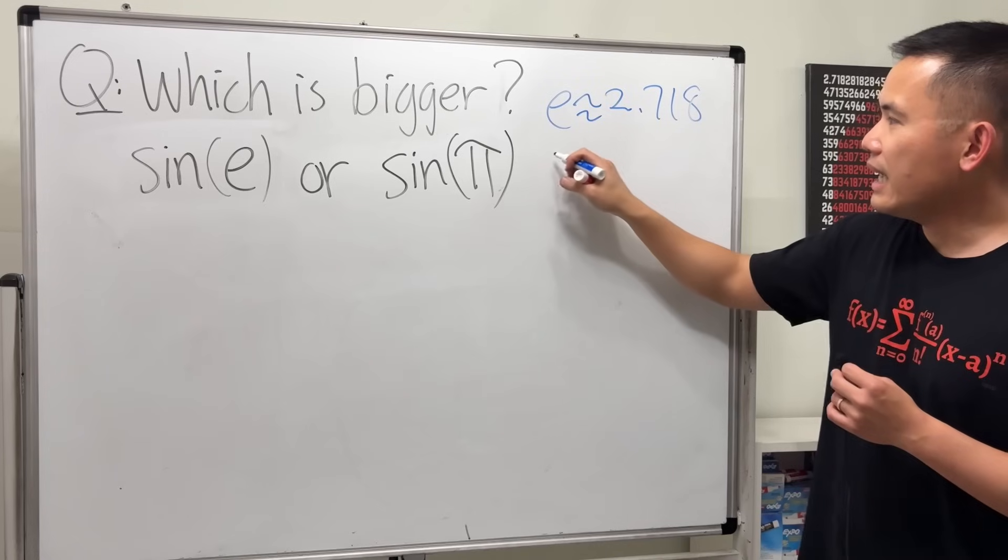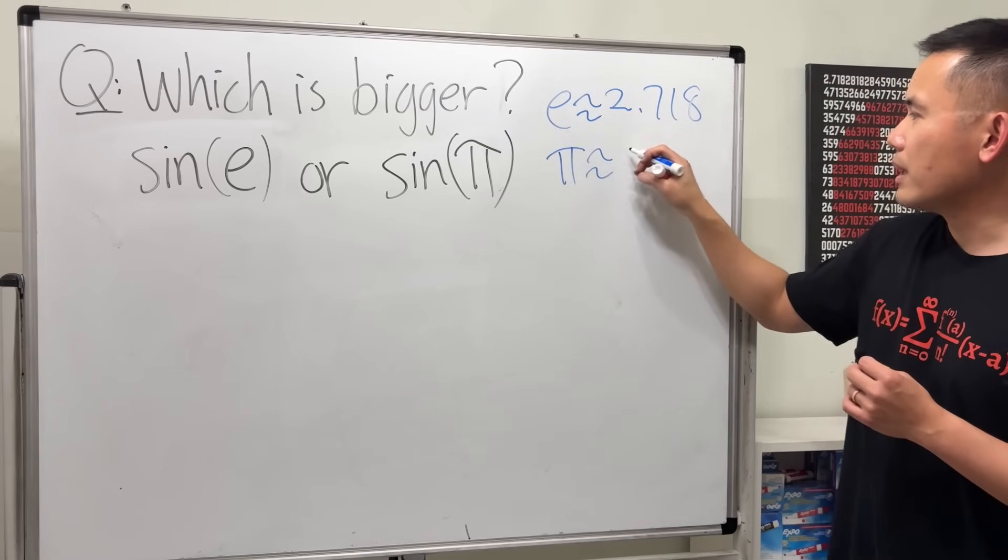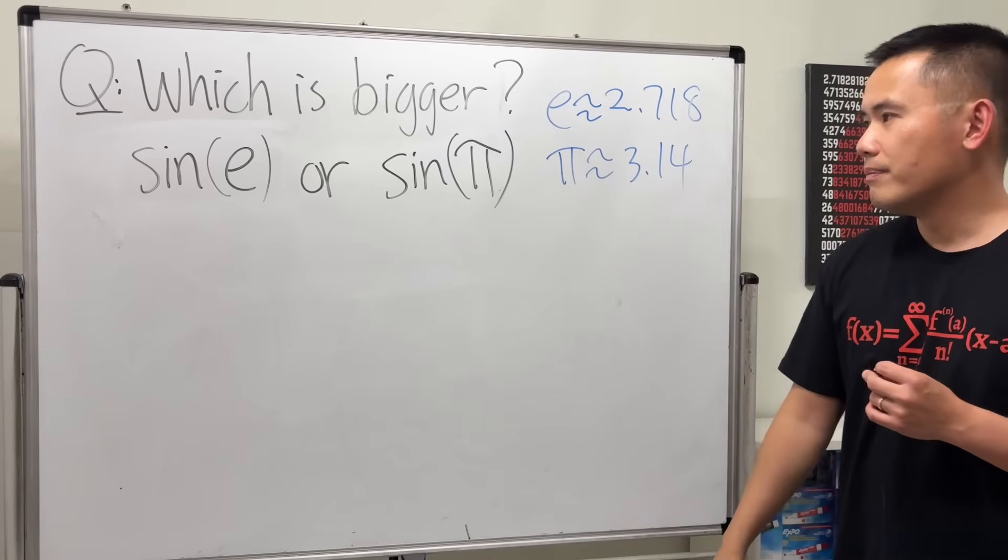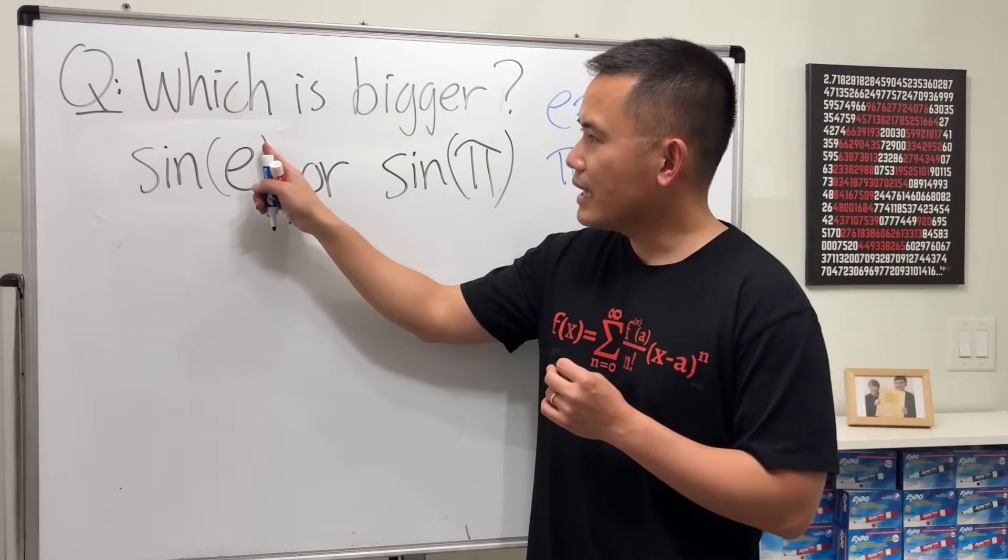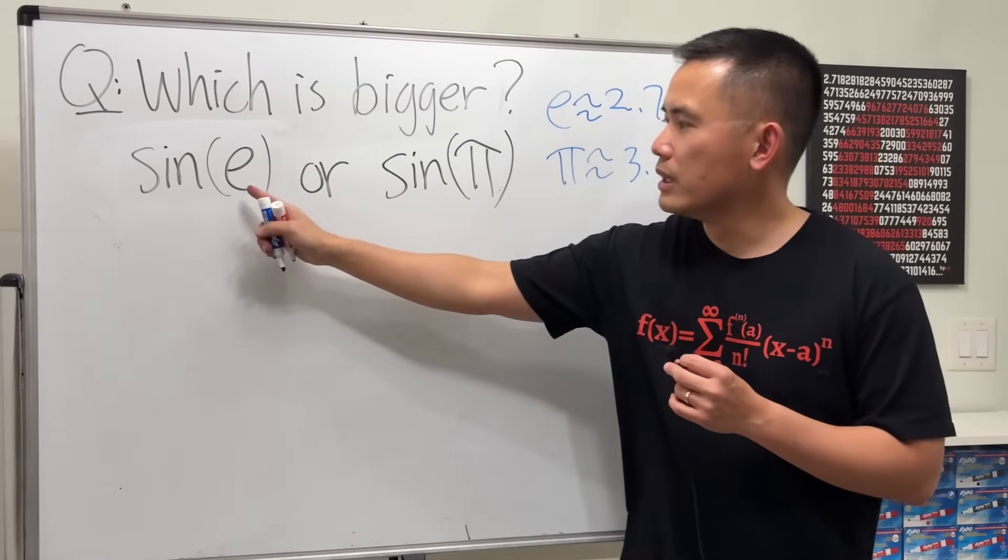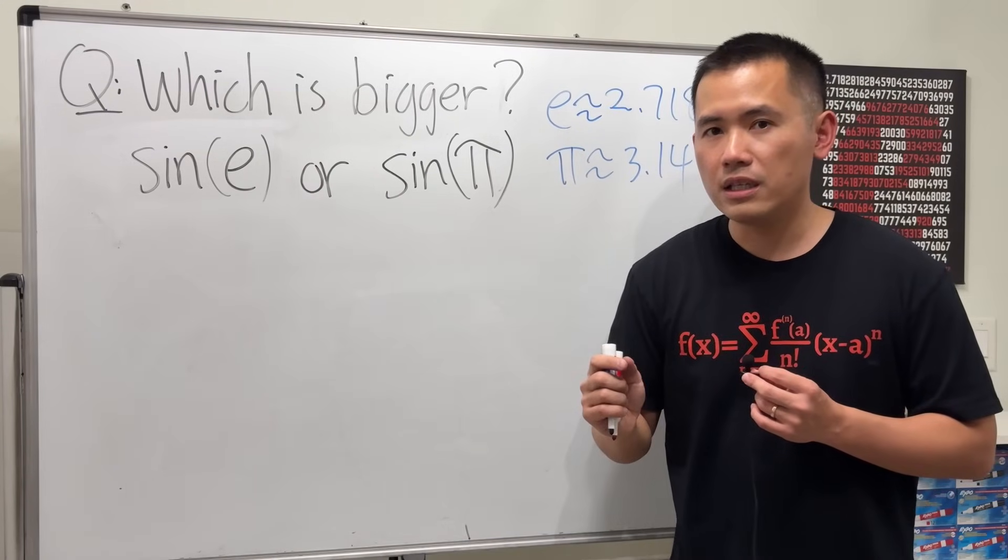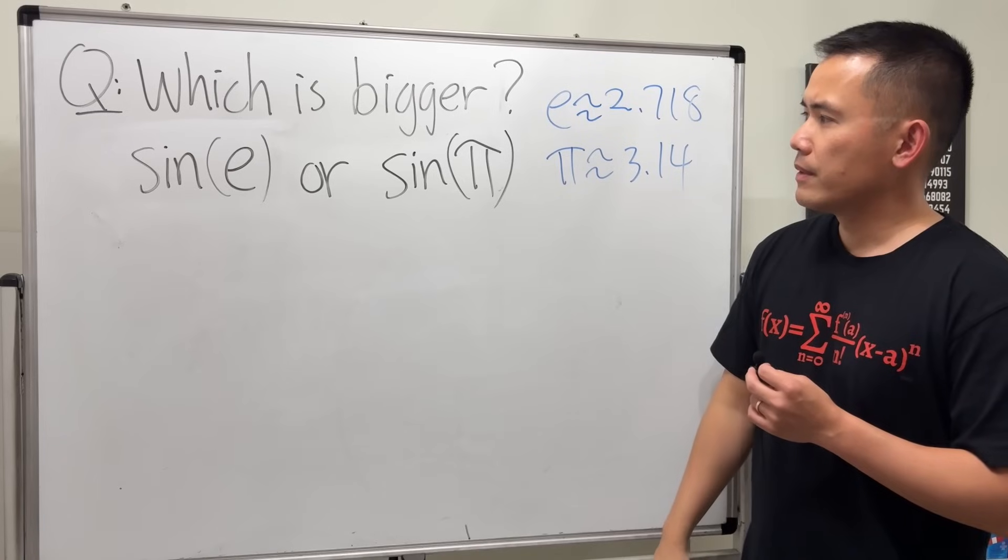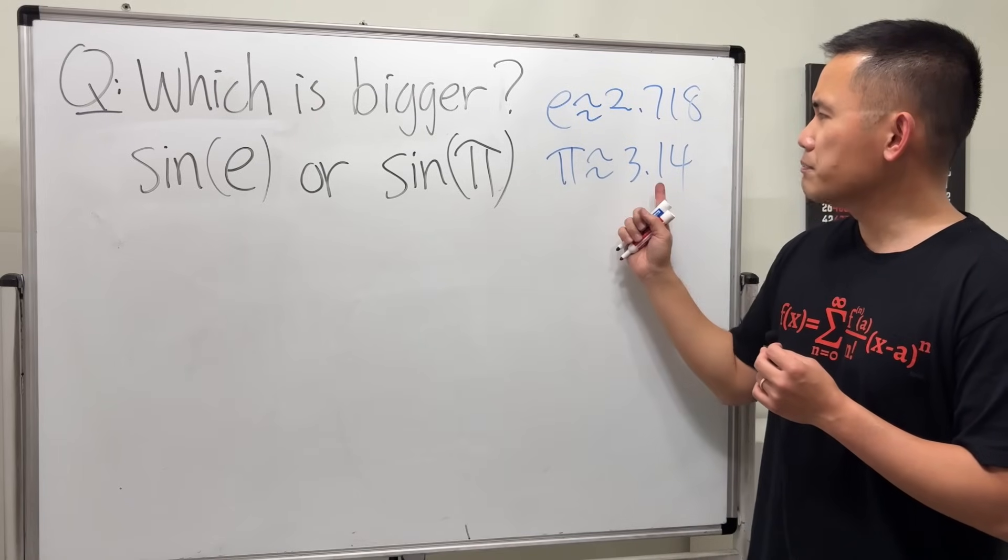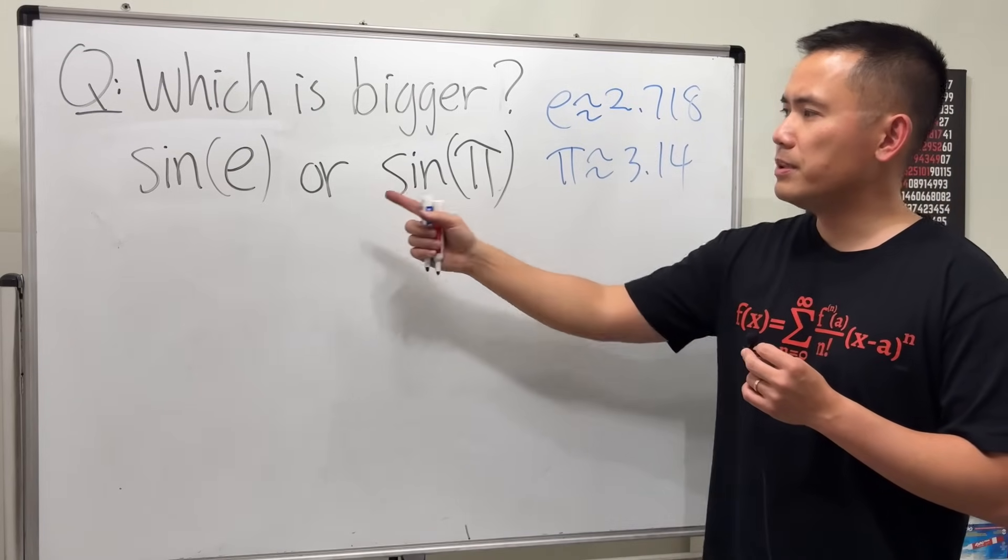Meanwhile π, of course we know that's about 3.14. Notice that there's no degree symbol, so these right here are measured in radians. Can we really say because π is bigger than e, so this is bigger than that?